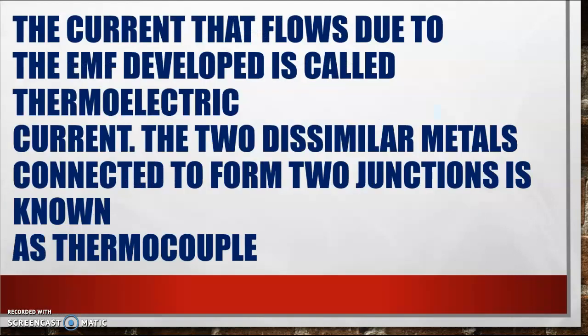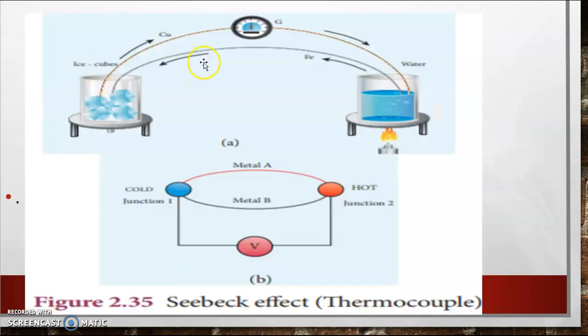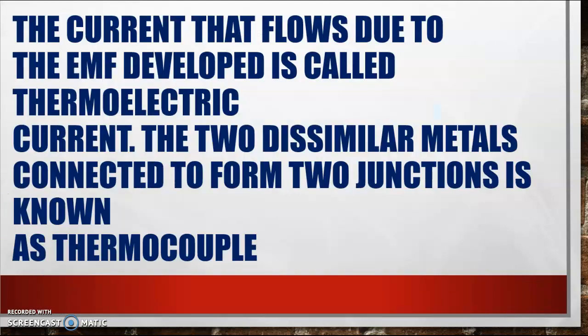The current that flows due to the EMF developed is called thermoelectric current. The two dissimilar metals that are connected to form two junctions is known as a thermocouple. Here, copper and iron are connected at each junction and hence it constitutes a thermocouple. This is called Seebeck's effect.